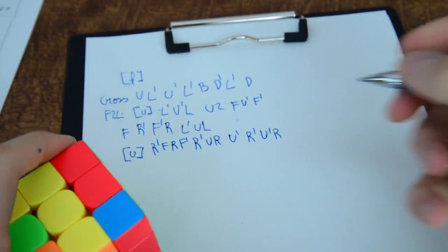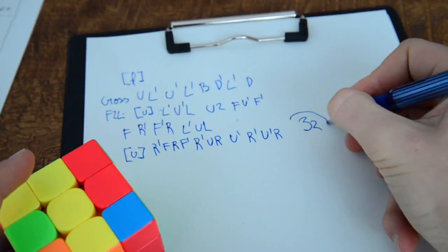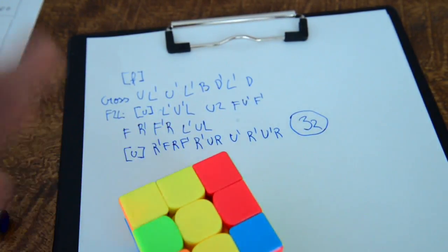Also one thing I like to do is just count the moves we got. So it's 32 moves for F2L.